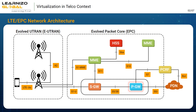PGW comes in place of GGSN of 2G and 3G networks. HSS replaces the HLR of 2G and 3G networks. PCRF is a node defined to manage quality of service and charging rules. Initially, all these network nodes were deployed using vendor-specific purpose-built hardware and software.